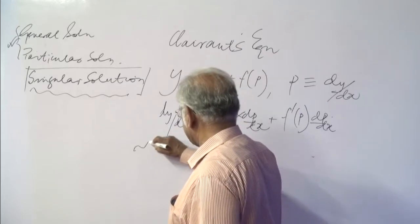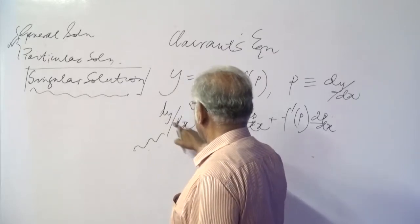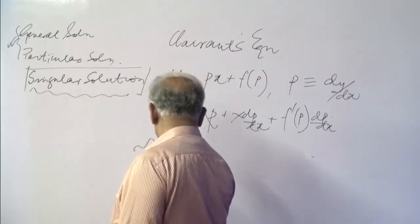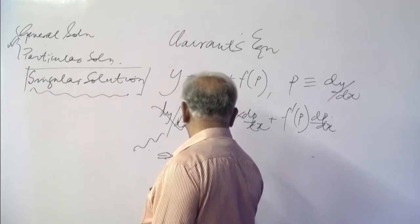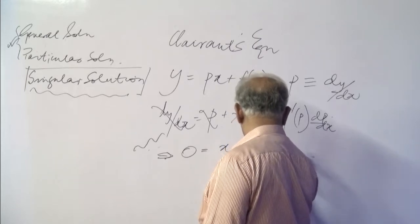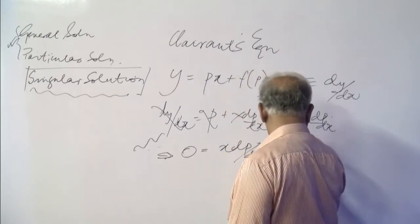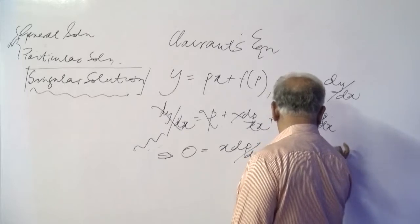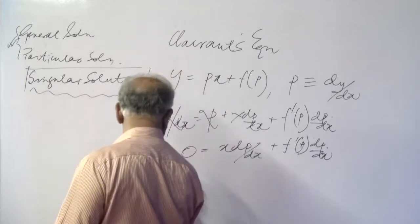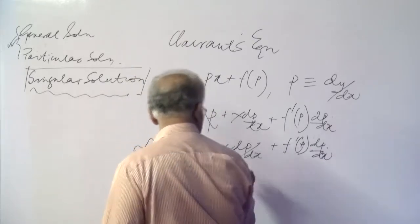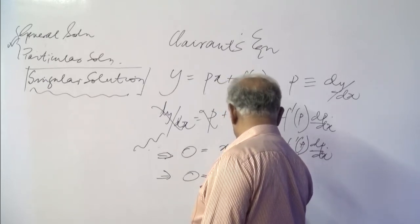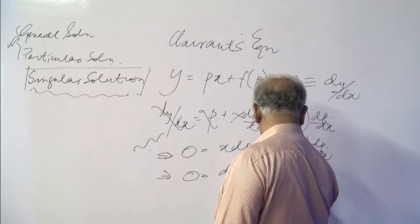So we have dy/dx equals p plus x·dp/dx plus f'(p)·dp/dx. Once we realize that dy/dx and p are the same term, we cancel them and get 0 equals x·dp/dx plus f'(p)·dp/dx. Taking dp/dx as a common factor, we get 0 equals dp/dx times (x plus f'(p)).